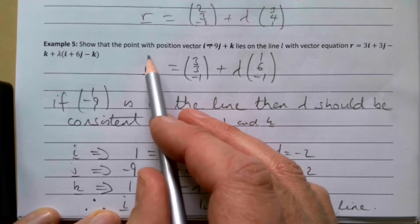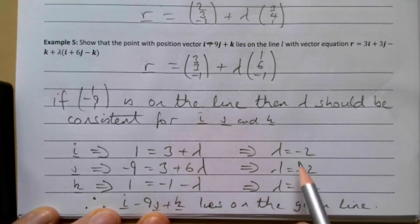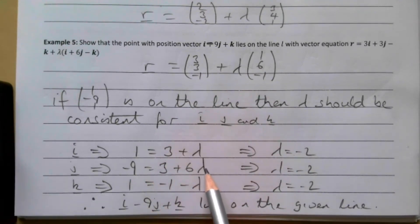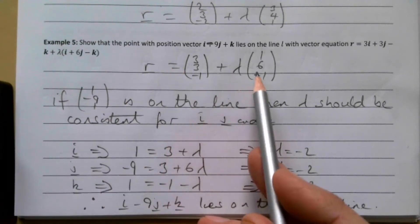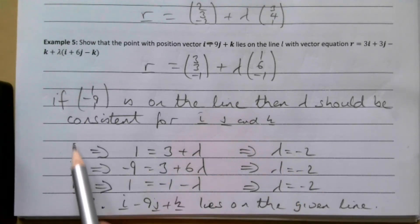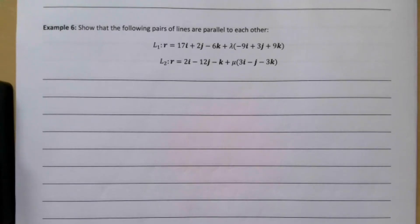For the i component: 1 = 3 + λ, giving λ = −2. For j: −9 = 3 + 6λ, so −12 = 6λ, giving λ = −2. Good. For k: 1 = −1 − λ, giving λ = −2 again. Since λ is consistent for all of i, j, and k, i − 9j + k lies on the given line.